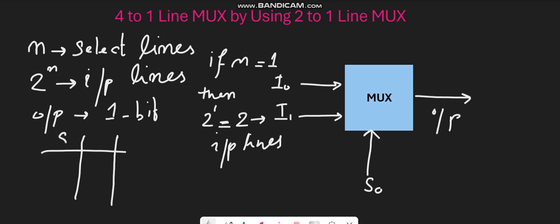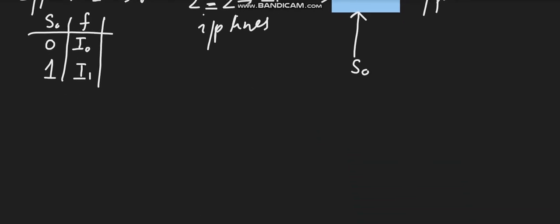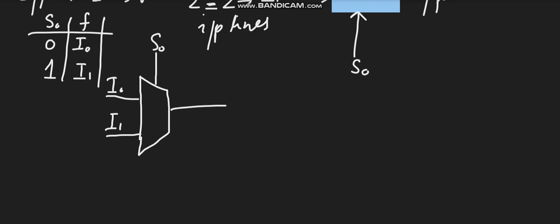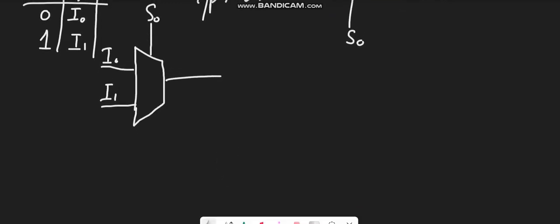If I represent the functionality of a multiplexer in terms of a table, I can mark here the select line and the output function f. When s0 is equal to 0, you will have i0 at the output side, and when s0 is equal to 1, you will have i1 at the output side. The multiplexer can also be represented showing input lines i0 and i1 connected with select line s0 to produce the output. This is a 2-to-1 line multiplexer.